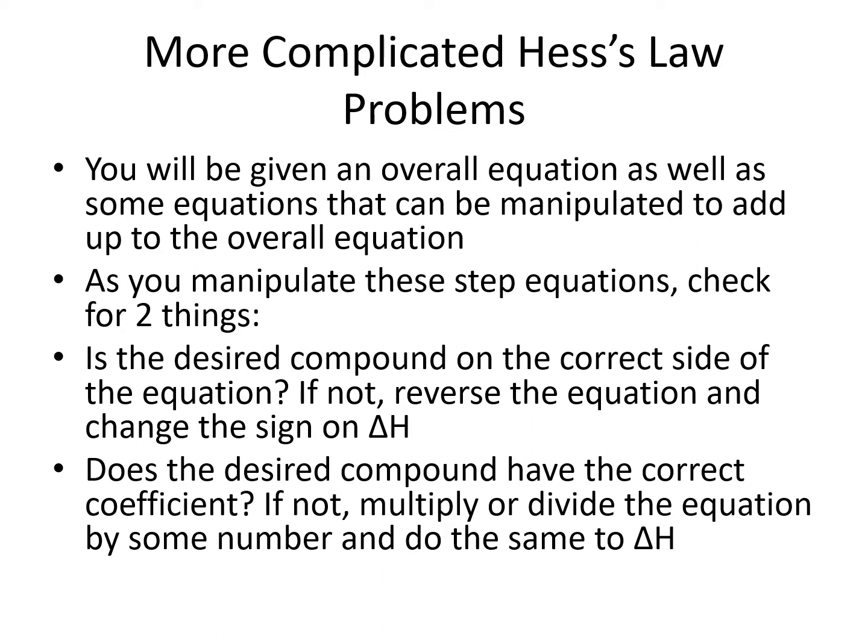We'll be checking for two things to be true of each of our step equations. First, is the desired compound on the same side of the equation in the step equation as it is in the overall equation? If not, we're going to reverse the step equation and change the sign on the associated delta H. Second, does the desired compound have the same coefficient as it does in the overall equation? If it doesn't, then we're going to multiply or divide our equation by some number and do that same multiplication or division to our delta H for that step.